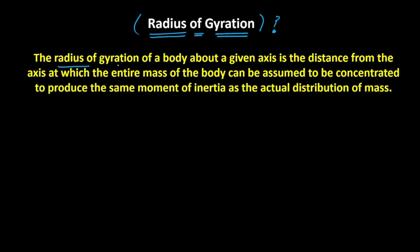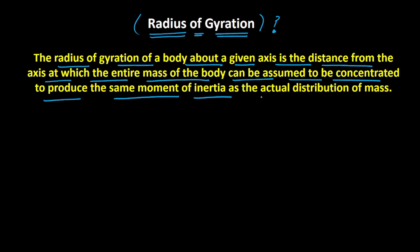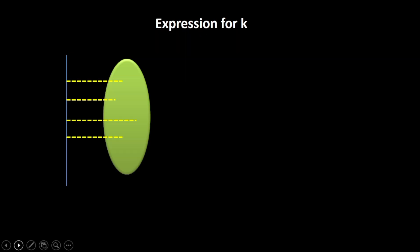The radius of gyration of a body about a given axis is the distance from the axis at which the entire mass of the body can be assumed to be concentrated to produce the same moment of inertia as the actual distribution of mass. This definition seems a little bit complicated, so let us derive an expression for radius of gyration to make it easier to understand.